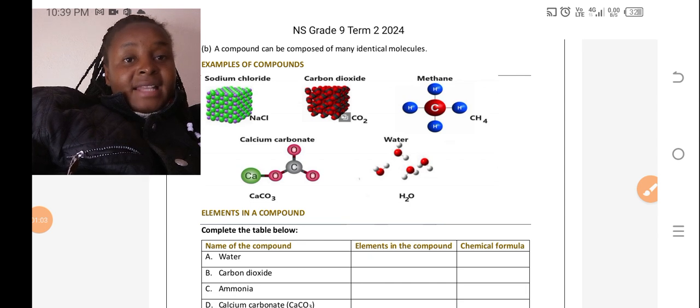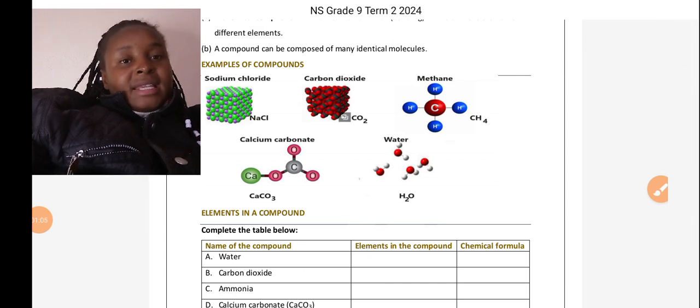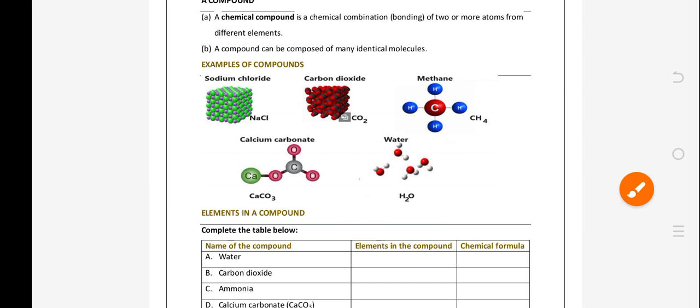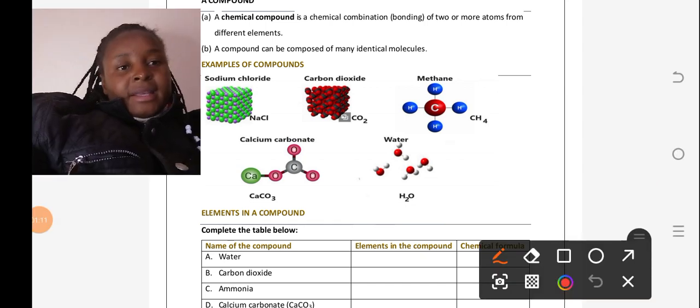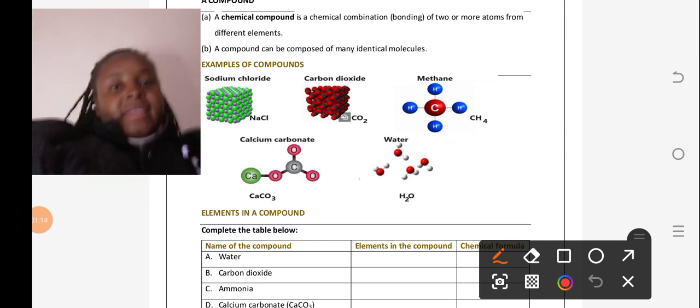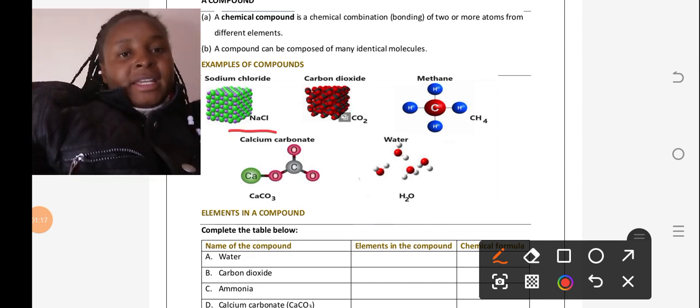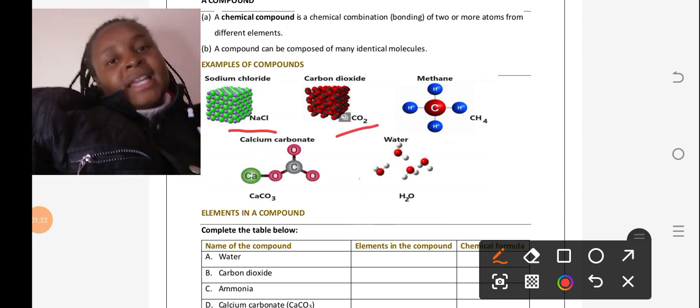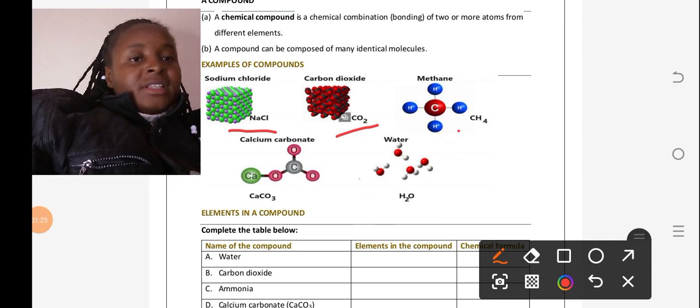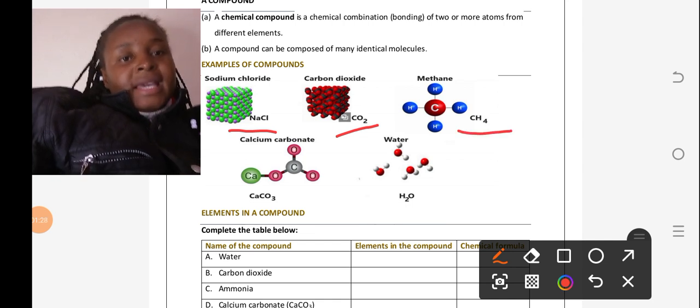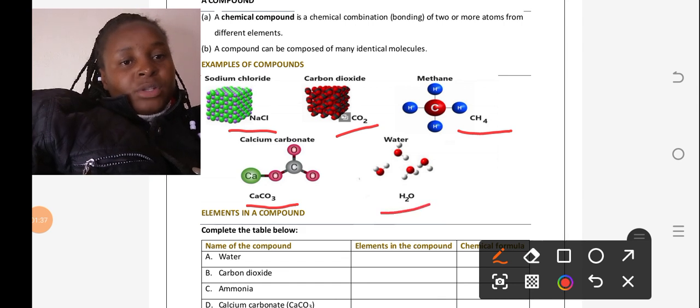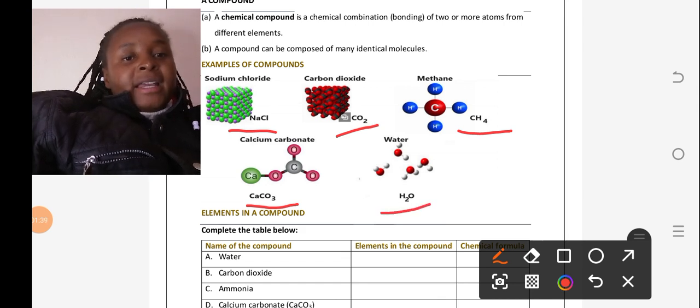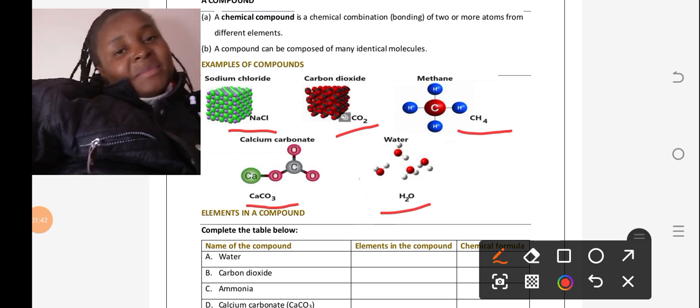For example, we have sodium chloride, a compound between sodium and chlorine. Carbon dioxide is a compound between carbon and oxygen. Methane is carbon and four hydrogens, and calcium carbonate is calcium with carbon and three oxygens. Water, which is H2O, is made up of two hydrogens and one oxygen.